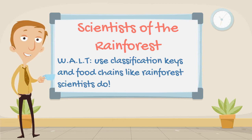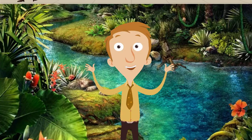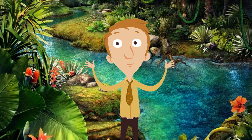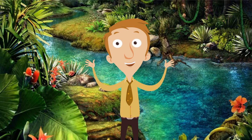Hello and welcome back to Rongmar. In today's science lesson we're going back to the rainforest for one final visit. Our goal for today's lesson is to use classification keys and food chains like rainforest scientists do. We've been learning a lot about the rainforest in the last few science lessons. Can you remember what we were talking about in the last science lesson? Pause the video and see if you can remember.